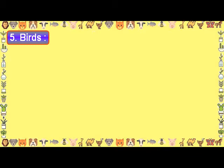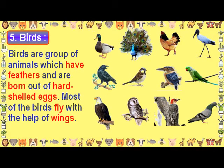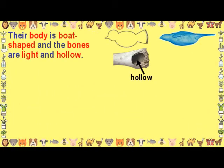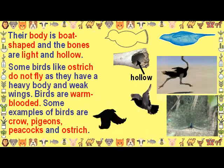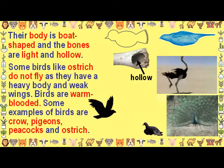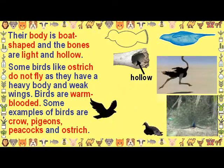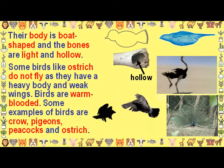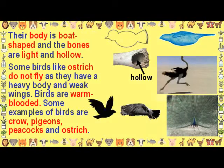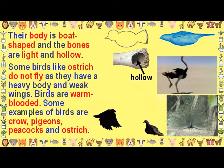Birds are a group of animals which have feathers and are born out of hard-shelled eggs. Most birds fly with the help of wings. Their body is boat shaped and their bones are light and hollow. Some birds like the ostrich do not fly as they have a heavy body and weak wings. Birds are warm blooded. Some examples of birds are crow, pigeons, peacocks and ostrich.